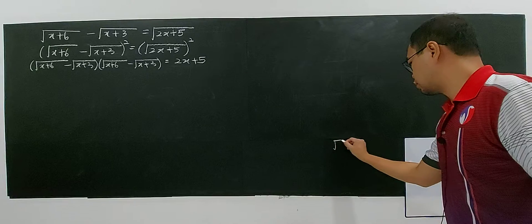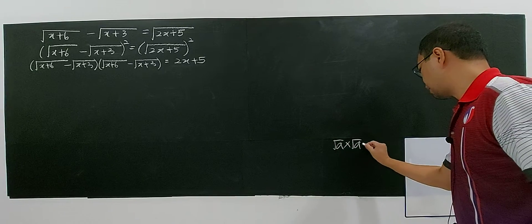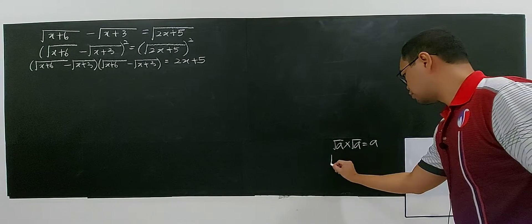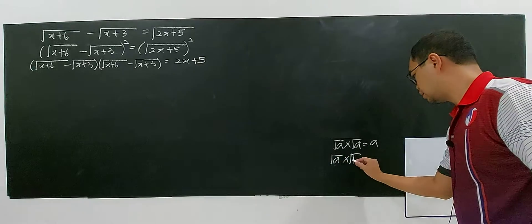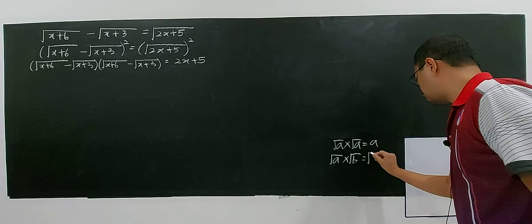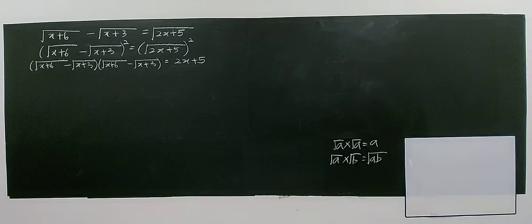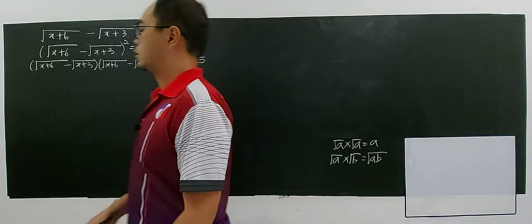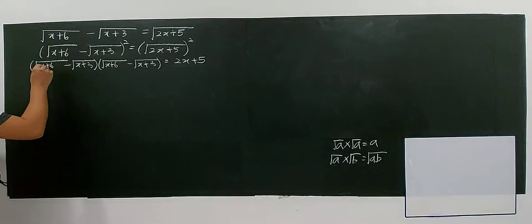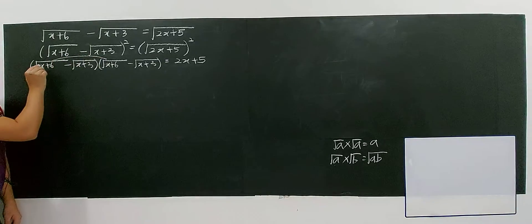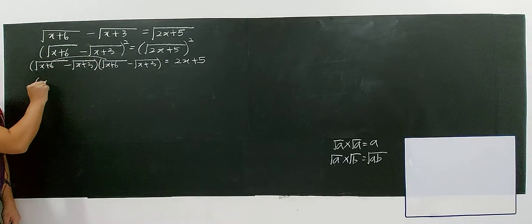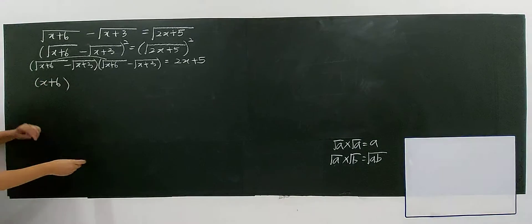You need to understand this concept: square root of a multiplied by square root of a gives you a. And square root of a multiplied by square root of b, where a is not the same as b, you combine them under one square root as √(ab). This is applying the law of indices. So for these two identical terms, square root of (x+6) times square root of (x+6) gives you x plus 6.